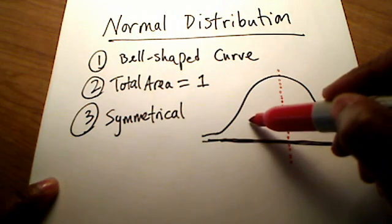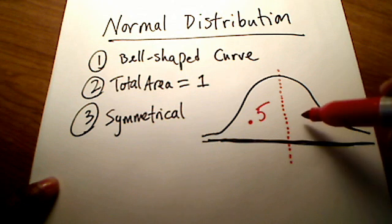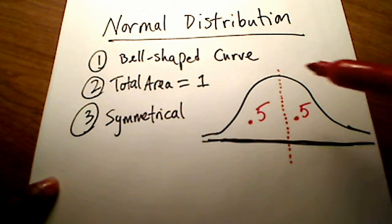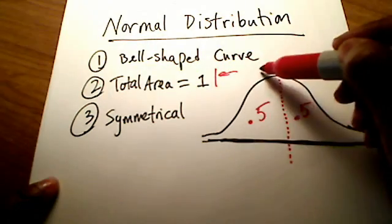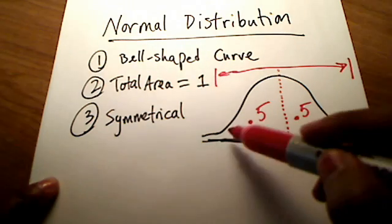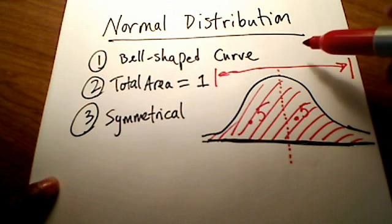if the whole thing is 1, is 0.5, and the other half is 0.5, giving you a total area, everything from here all the way over to here, a total area altogether. Everything under the curve here gives you a total area of 1.